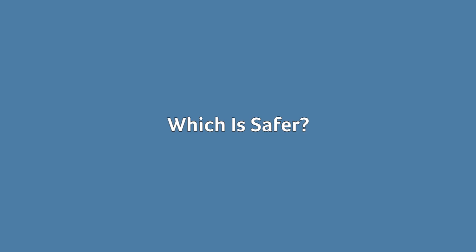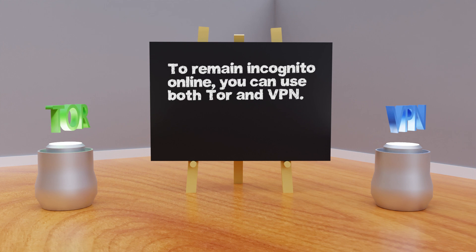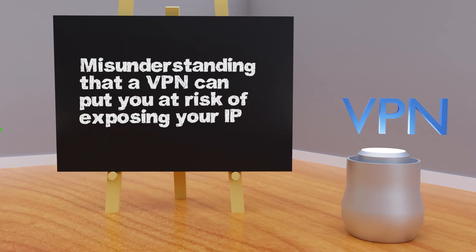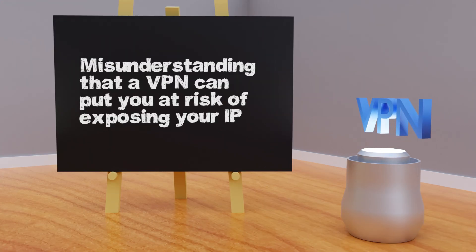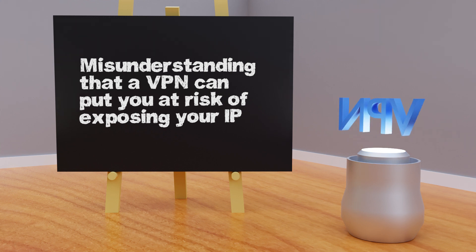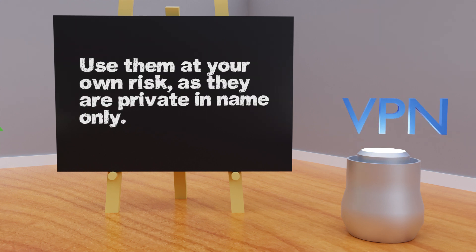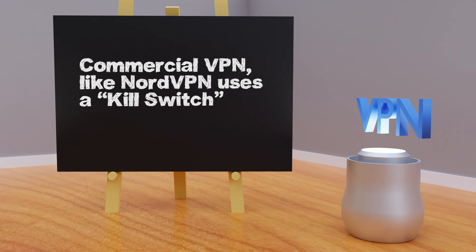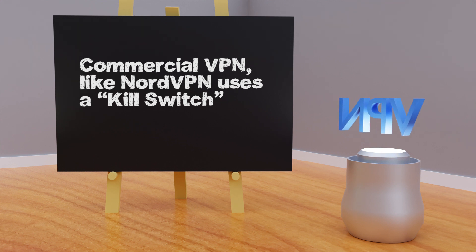Tor versus VPN: which is safer? To remain incognito online you can use both. There is a common misunderstanding that using a VPN can potentially put you at risk of exposing your IP address. That is certainly true for many poor-quality free VPNs found on the Google Play Store — use them at your own risk as they are private in name only. A good commercial VPN, such as NordVPN, uses a kill switch with a system-wide network lock to prevent accidental IP address leakage.